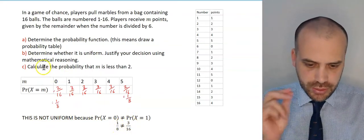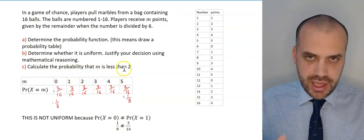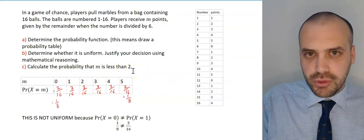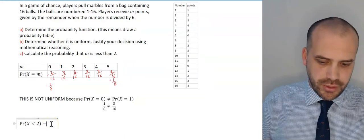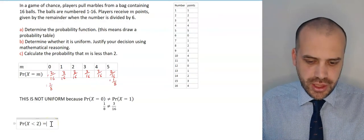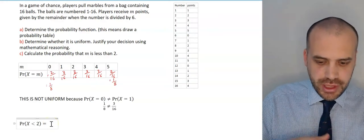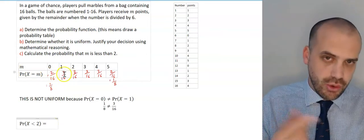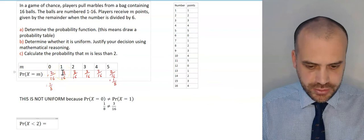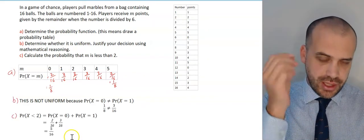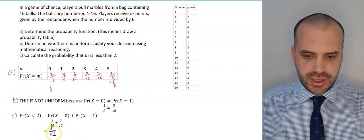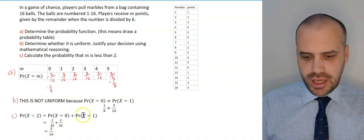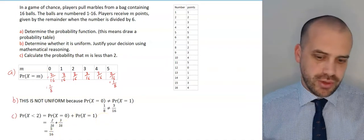Finally, calculate the probability that m is less than 2. Writing that more formally, we want to find P(m < 2). That's obviously going to equal the probability that it's 0 or 1, so we add them together. And there's our answer: 5 out of 16. That's just a brief look at something you might run into.